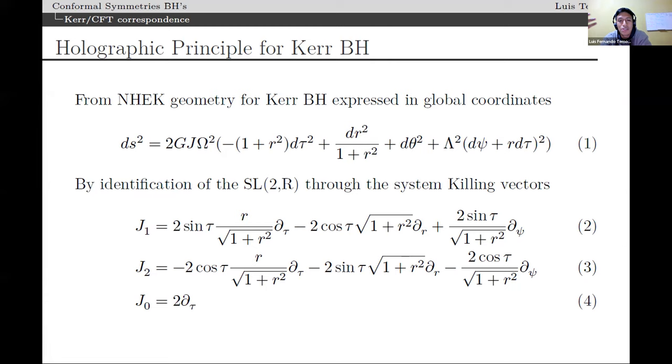J1, J2, and J0, which all together form the Virasoro algebra associated to conformal field theory in two dimensions. So, from this starting point, it was conjectured that it was possible to see that in the near horizon regime, we could obtain a conformal dual.